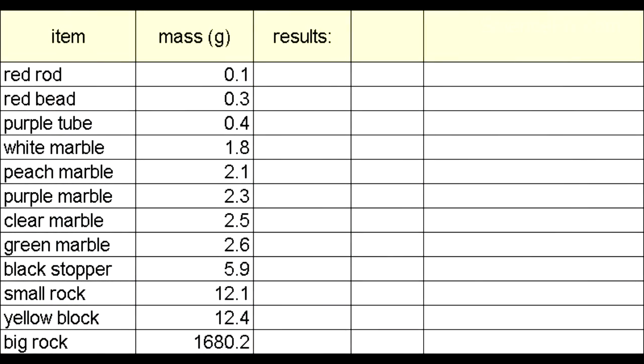So here are the items and the results, and it seems like mass has no effect on whether an object sinks or floats in water. The red rod had the least mass and it sinks when placed in the water, and the most massive object, the big rock, floats when placed in water.